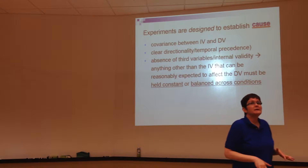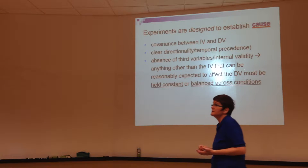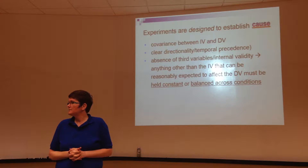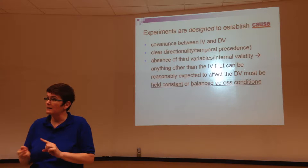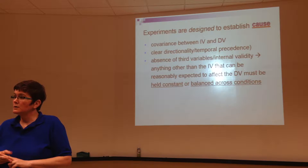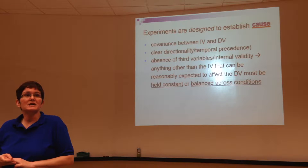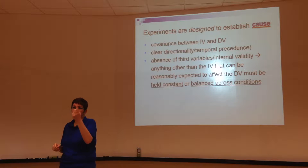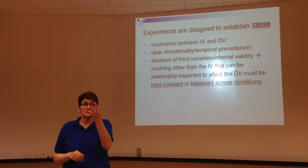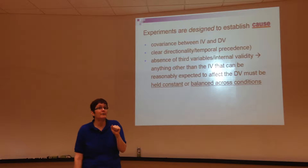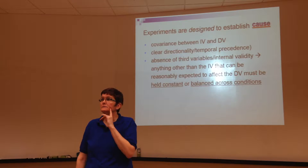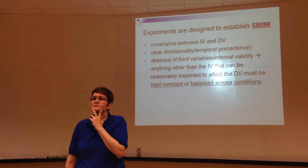Does anybody have any questions from what we covered last time? We went over different types of claims: frequency claims, correlational claims, and causal claims. We also talked about the different types of validity, which were construct validity, internal, external, and statistical. Does anybody have any questions about any of those things right now, or are we okay to move on to our next topic?